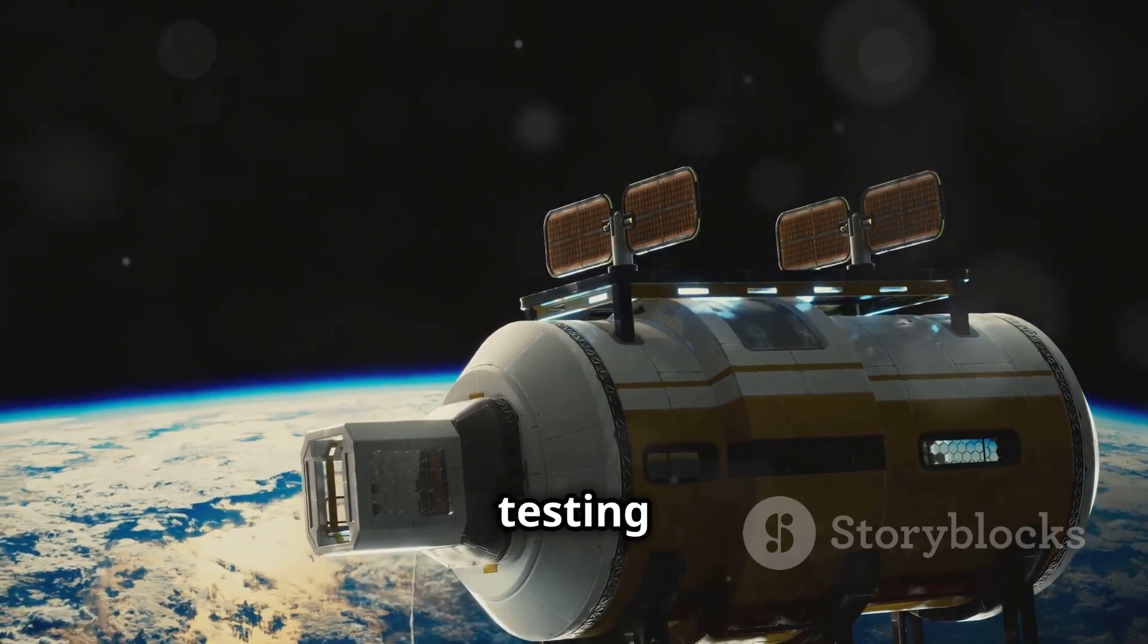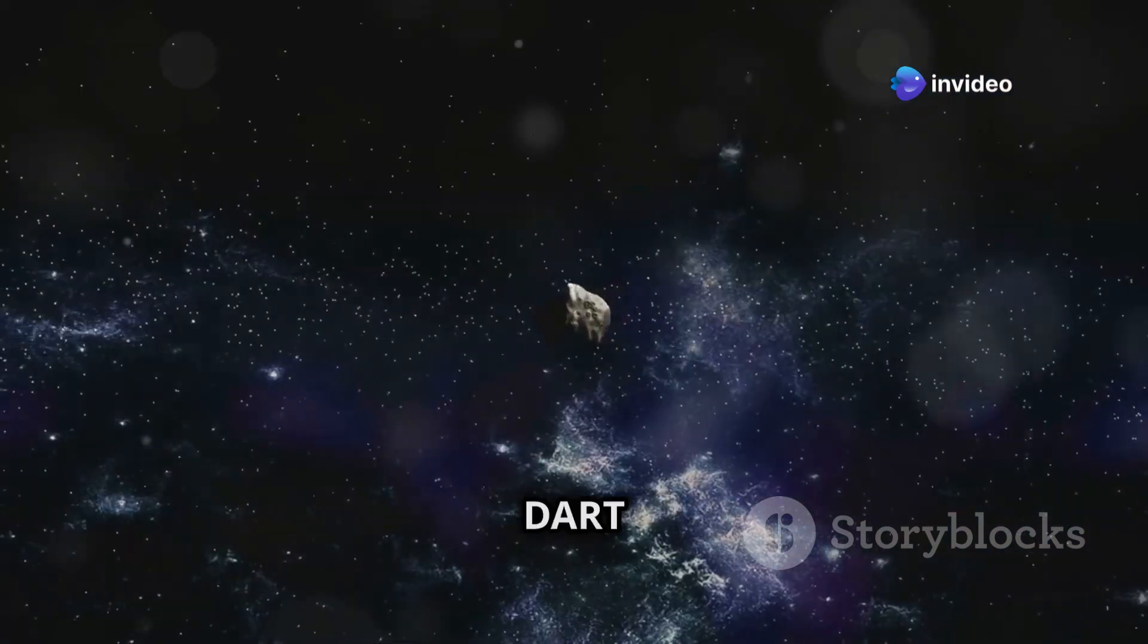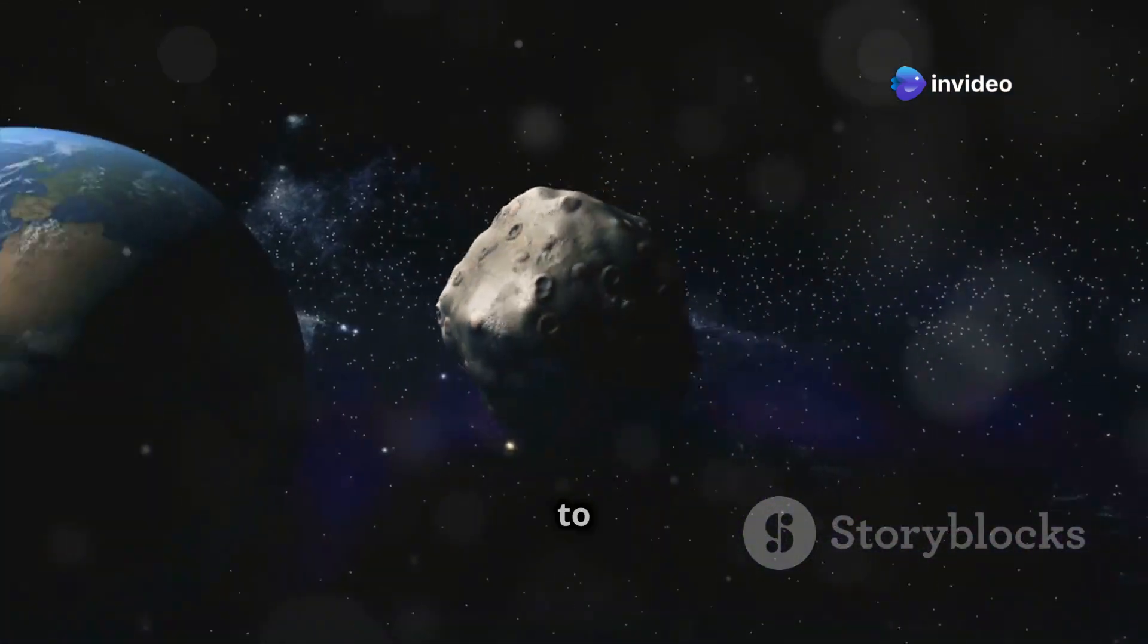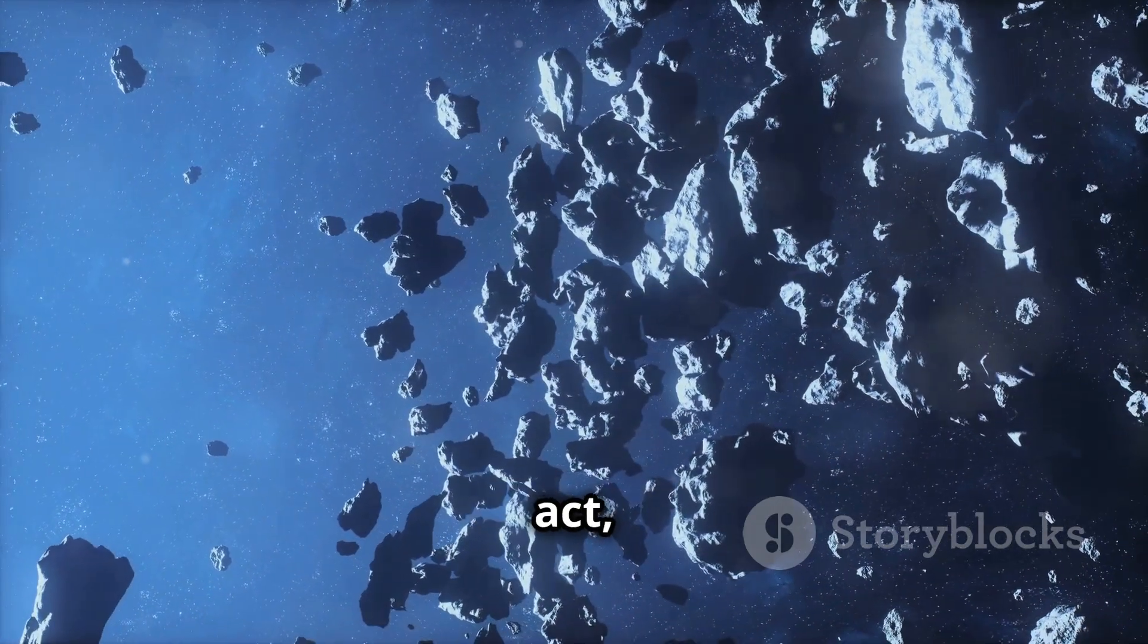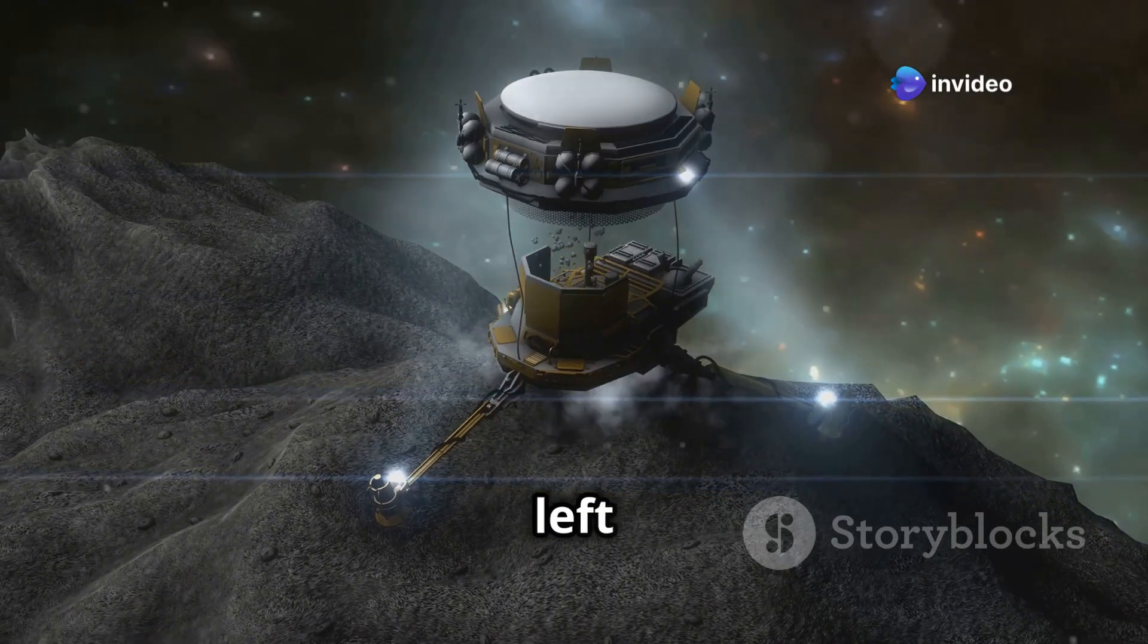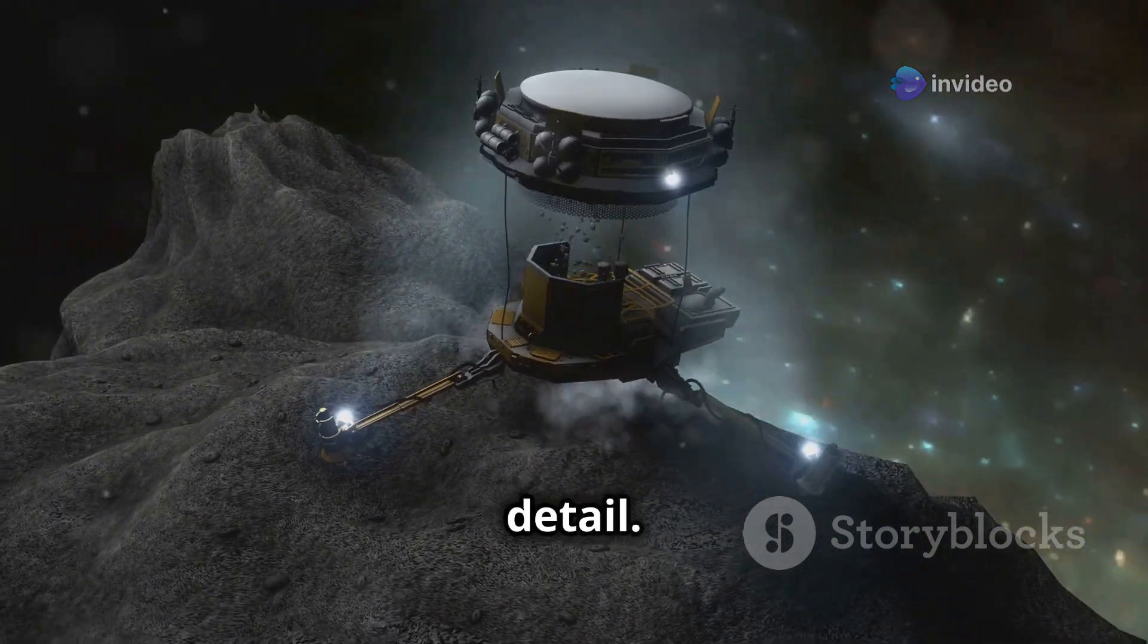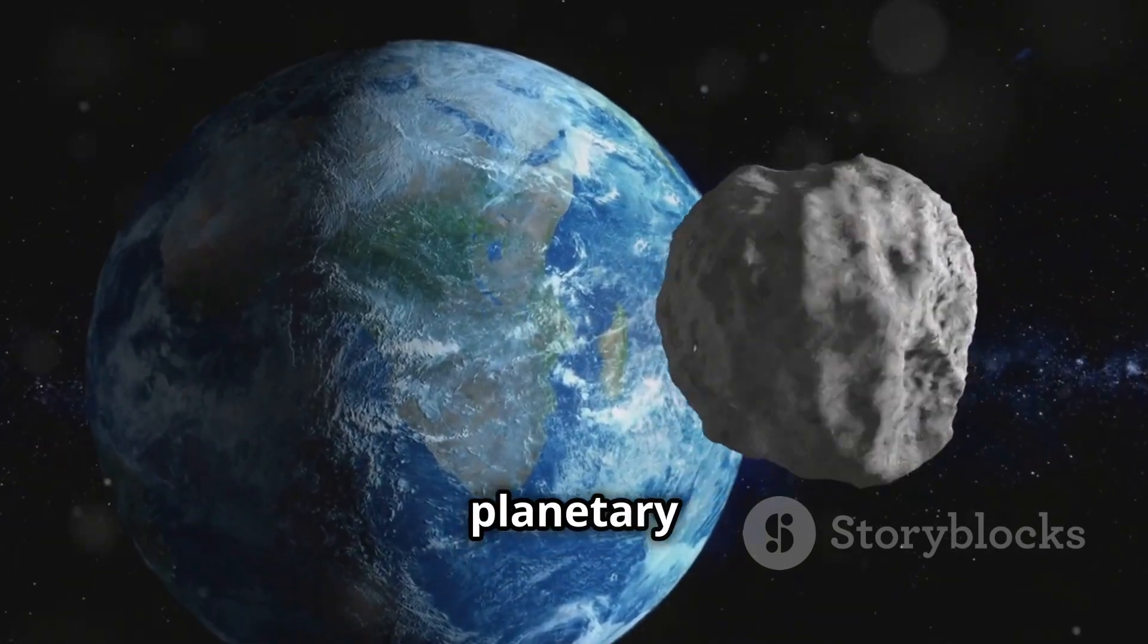But ESA isn't stopping there. Remember the DART mission, the one where NASA slammed a spacecraft into an asteroid to see if we could deflect it? Well, ESA's Hera mission is the follow-up act, and it's set to rendezvous with the same asteroid system in 2025. Hera will be taking a close look at the impact crater left behind by DART, studying the asteroid's composition and structure in detail. These missions highlight Europe's commitment to both scientific discovery and planetary defense.